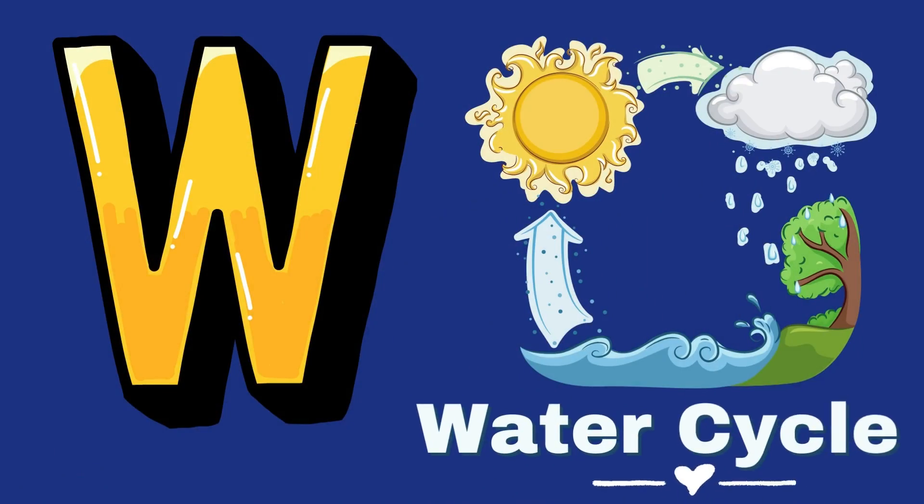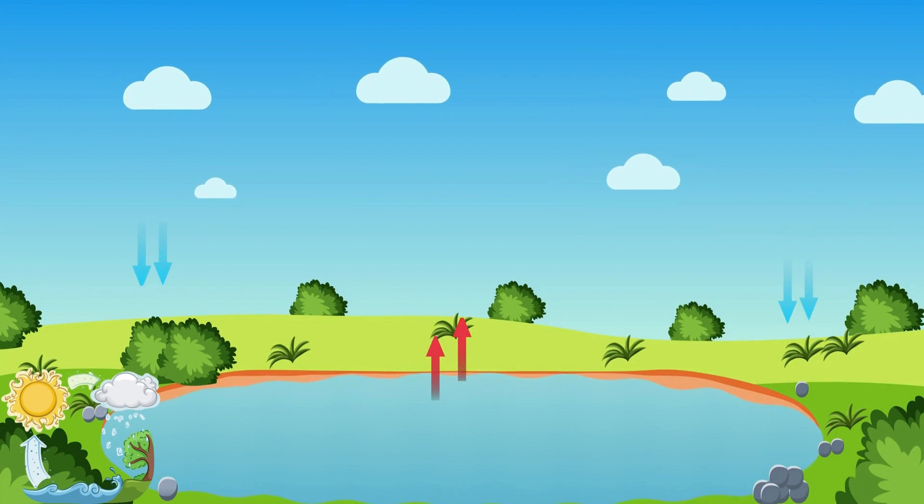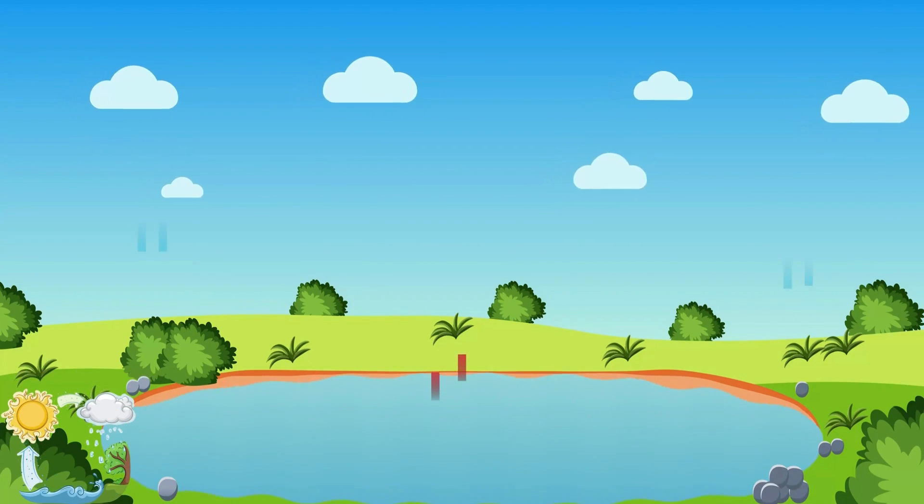W for Water Cycle. The water cycle is nature's way of moving water day by day. Evaporation from lakes and seas forms clouds up high, like floating keys. Condensation brings rain and snow that falls to Earth, ready to grow. Water collects in rivers and lakes, then back to the ocean, the cycle makes.